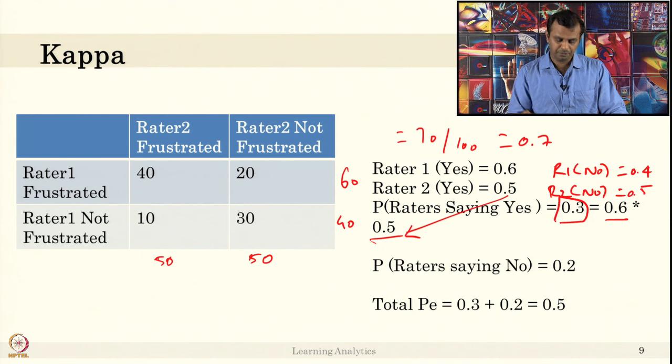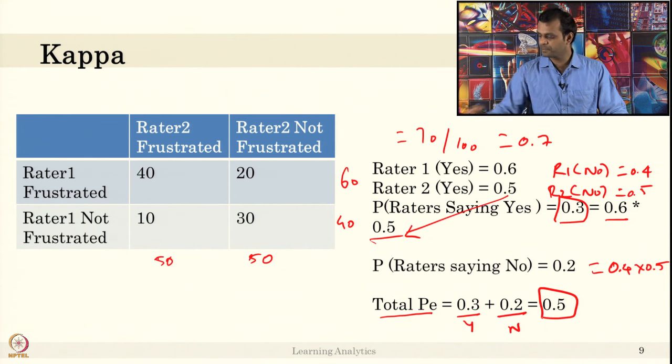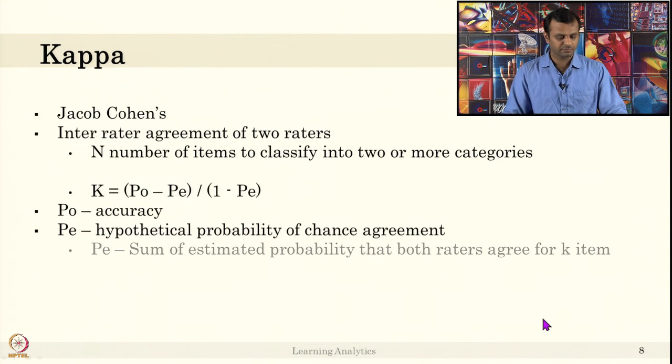If you compute, there will be 0.3. Similarly, for raters saying no, will be 0.4 into 0.5, that will be 0.2. What is the observation? Observation probability is like 0.3, that is yes value plus no value, that is 0.5. This is the sum of hypothetical probability of chance agreement, that is PE, or the observation accuracy we say.